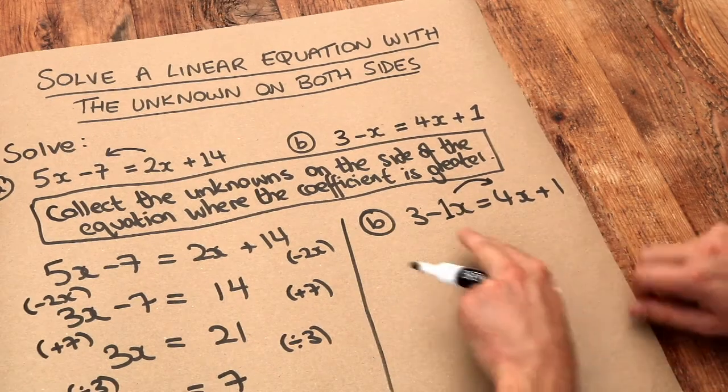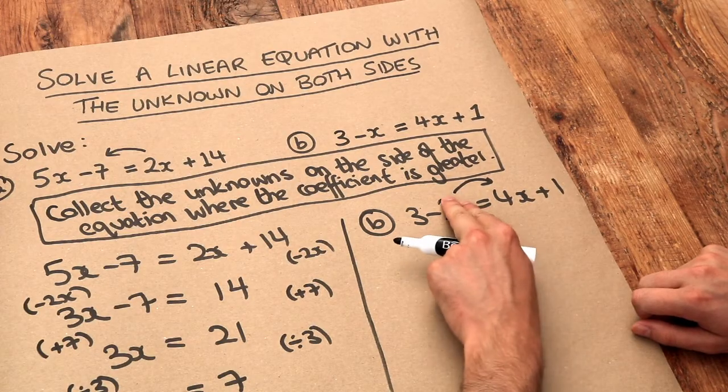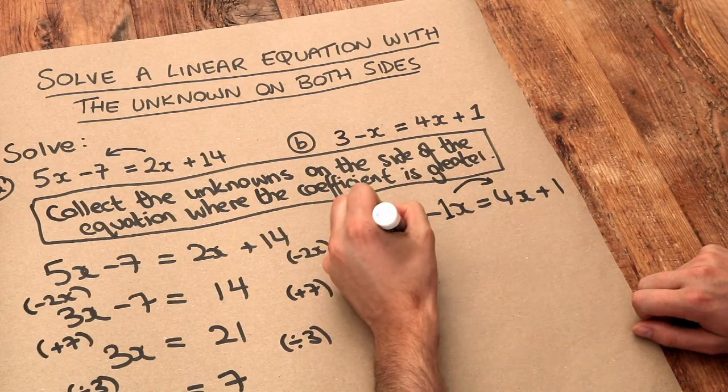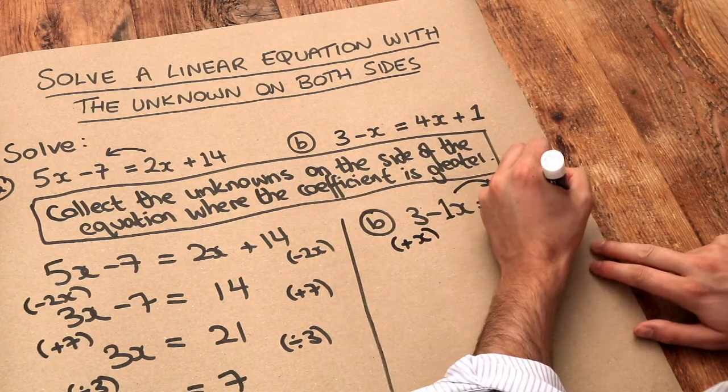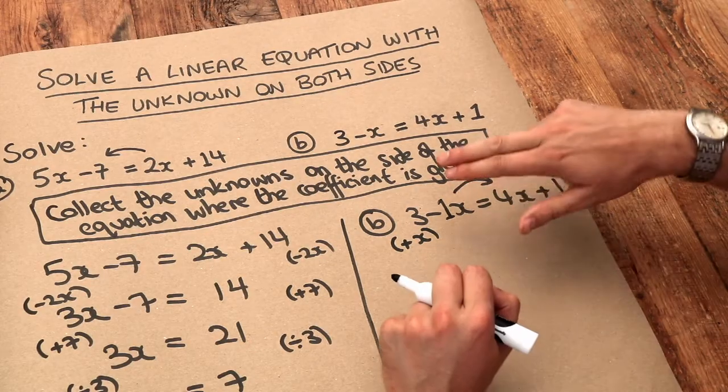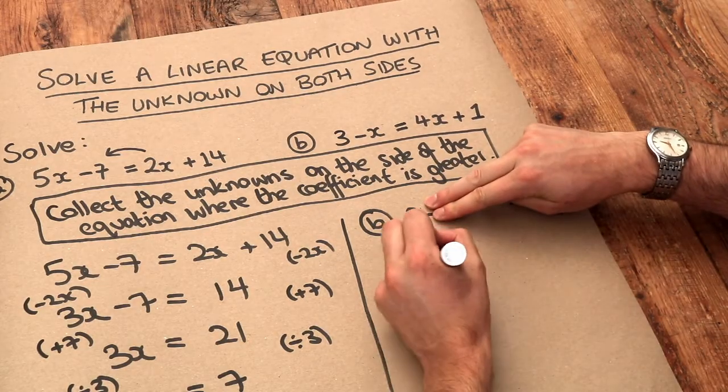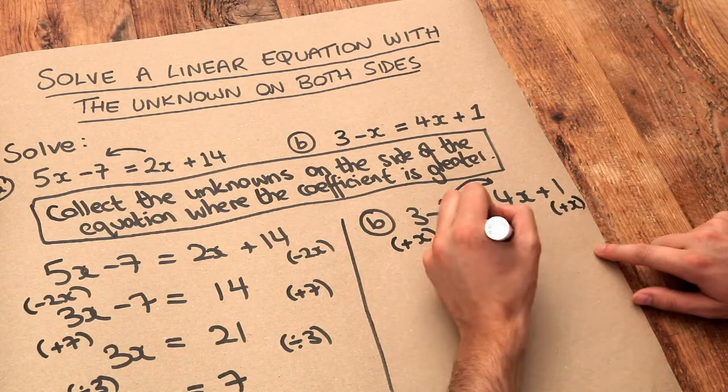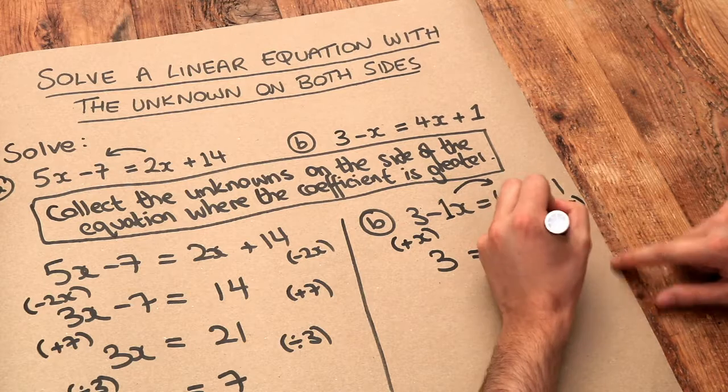So therefore, we want to get rid of that minus 1X because we want all the X's on the right-hand side. And therefore, to get rid of the minus 1X, we do the opposite. We add 1X. So we add X to both sides. So on the left-hand side, adding the X gets rid of that minus X, leaving just 3. And if we add X to here, 4 lots of X plus 1 lot of X is 5X. And we've still got that plus 1.